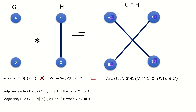We can merge the adjacency rules into one statement, which is why this product is also known as the OR product. The statement is: two vertices in the conormal product, each representing a pair of vertices from the factor graphs G and H, are adjacent if their left entries are adjacent vertices in the left graph, or — and that's an inclusive OR — their right entries are adjacent vertices in the right graph.